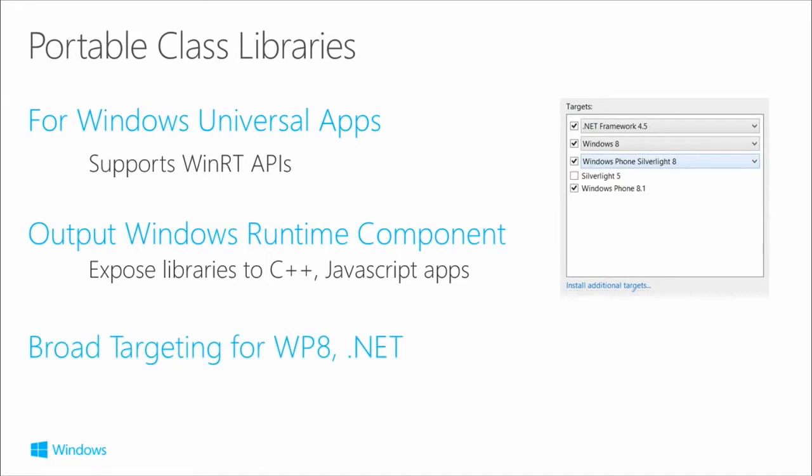We can also use portable class libraries for broad targeting of Windows Phone 8 and .NET frameworks. But as mentioned, targeting .NET Framework and Windows Phone Silverlight 8 will constrain the API set — it doesn't make it useless, but you lose the ability to use Windows Runtime APIs.